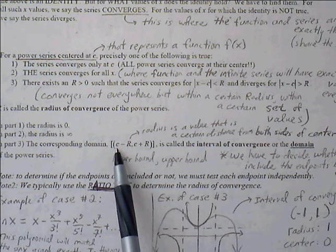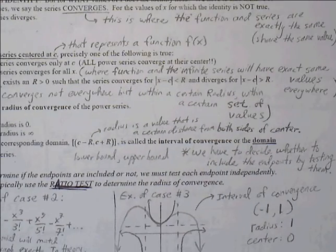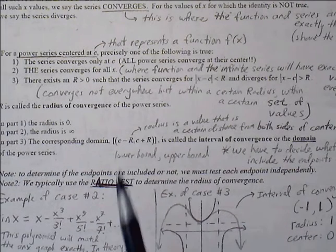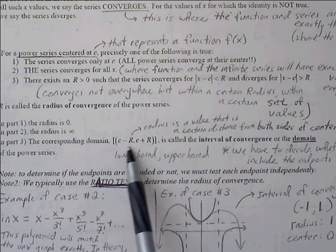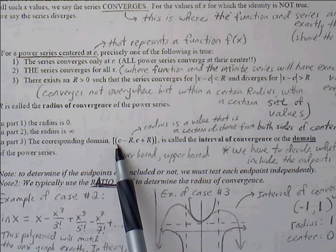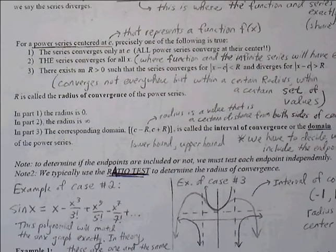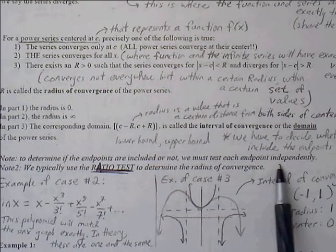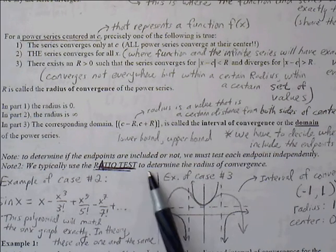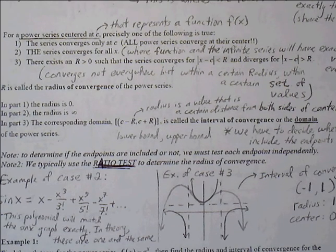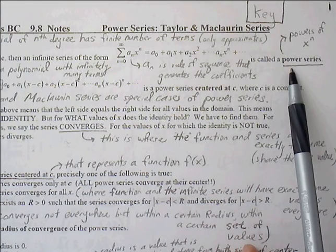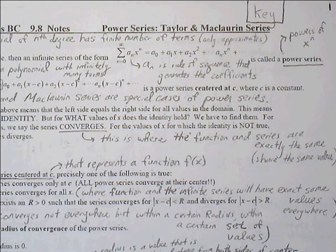However, we must also consider that the endpoints may or may not converge, so we have to separately test each endpoint. If the left endpoint doesn't converge, we use a parenthesis; if it does converge, we use a bracket. We must test each endpoint independently to determine if it's included. We typically use the ratio test to determine the radius of convergence, because power series always have exponents, and the ratio test is a good fit for series involving exponents.